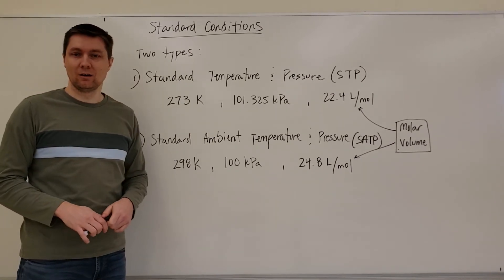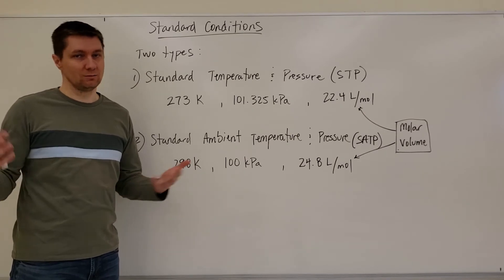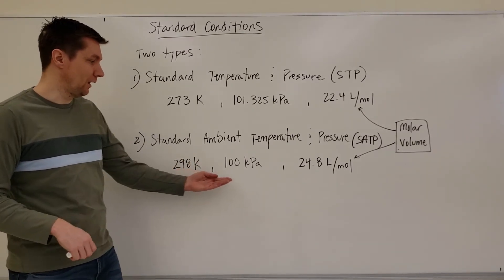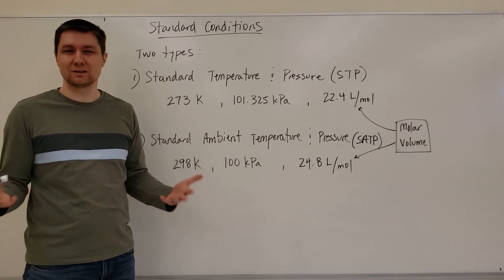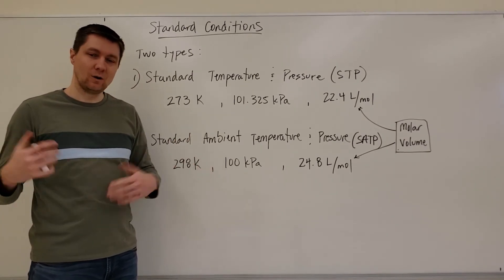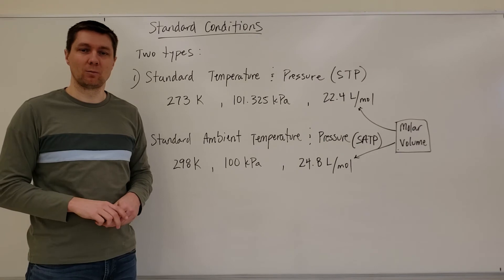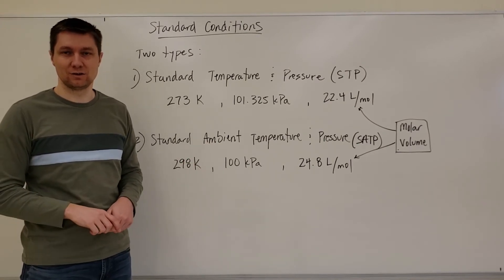Let's make our now conditions room temperature. That seems a little bit more reasonable. And instead of 101.325 kilopascals, even though that's sea level, they just said, why don't we just make it a nice good round number of 100. That's a lot easier to use in calculations.